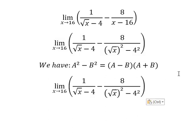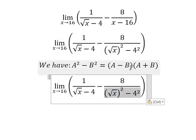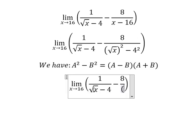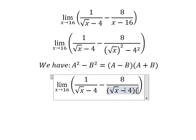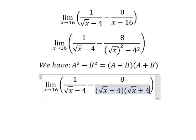We need to transform this expression using the difference of squares formula A squared minus B squared equals (A minus B)(A plus B). So we rewrite the denominator x minus 16 as square root of x minus 4 multiplied by square root of x plus 4.